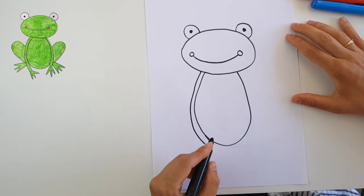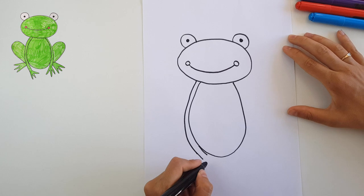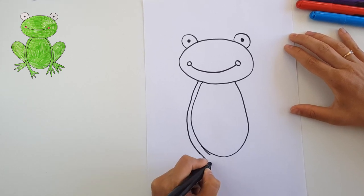Here, for the hands, I will draw it like... It will look a bit like the letter M.